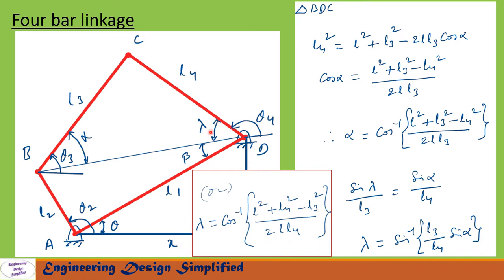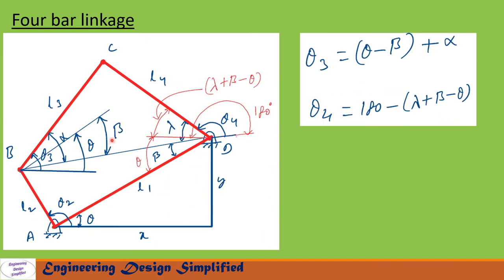If lambda happens to be less than 90 degrees in any position of theta 2, we can comfortably use the sine rule; otherwise use the cosine rule. Looking at this portion of the diagram, the angle from here to L3 is theta 3, the angle from the red line to the blue line is alpha, and since this line is parallel, that angle is theta. Since this angle is beta, from this portion of the diagram we can write: theta 3 equals theta minus beta plus alpha.